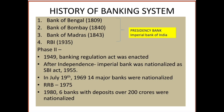So this leads to RBI in 1934. There are Phase 1, Phase 2, and Phase 3. Phase 1 is the merger of the Presidency Banks into the Imperial Bank of India.